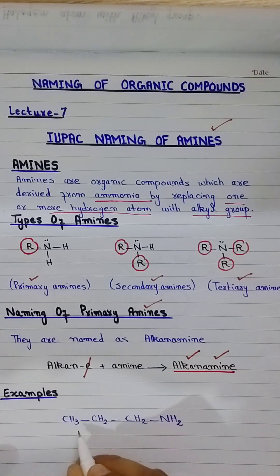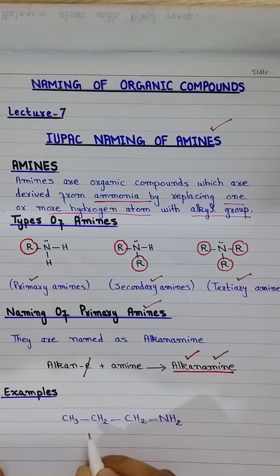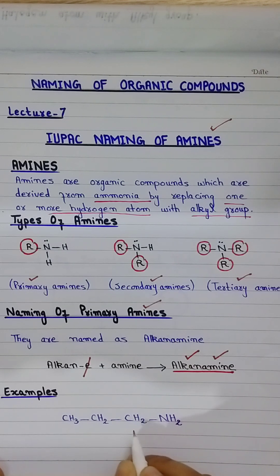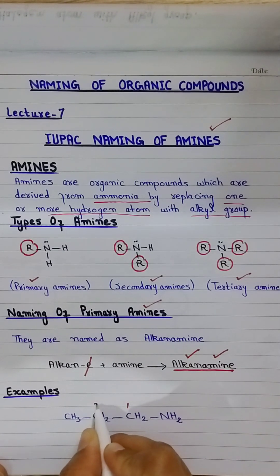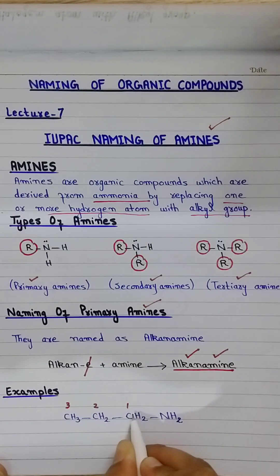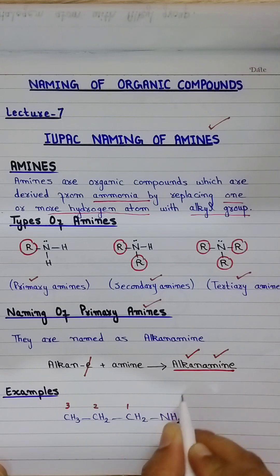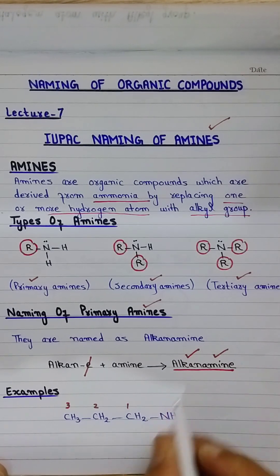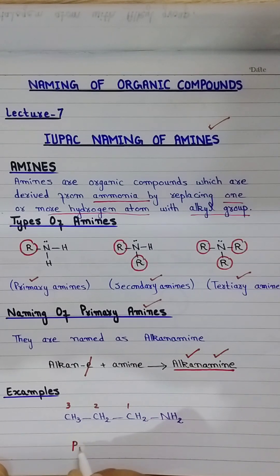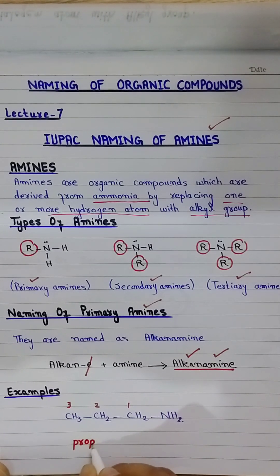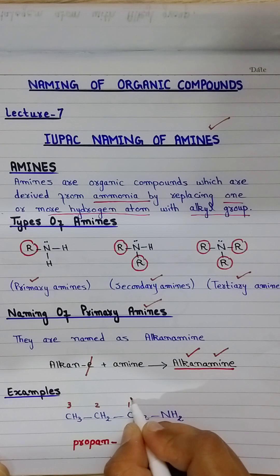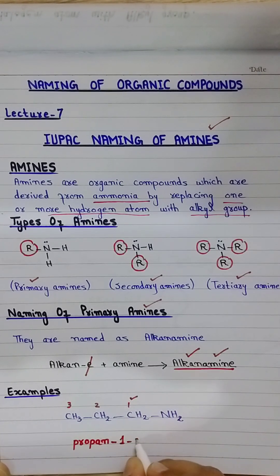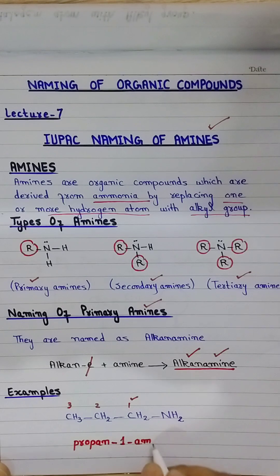For example, in the first example of IUPAC naming: if the chain contains more than two carbons, we must number the chain and indicate the amino group's position. In this case there are three carbons, so we number from the amino group's side. Three carbon chain is represented as propane. The amino group is attached to carbon number 1. The end name is amine — so the name is propan-1-amine.